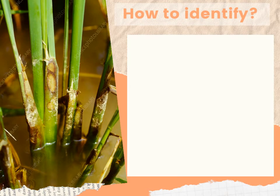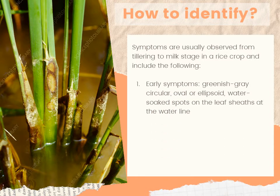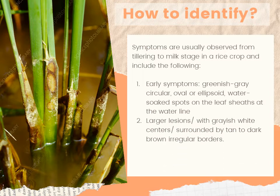Moving on to the symptoms of rice sheath blight: early symptoms usually develop on the leaf sheaths as water-soaked, secular, oval, or ellipsoid water-soft spots which are greenish-gray in color. As the disease progresses, they enlarge and tend to connect, forming larger lesions with grayish-white centers surrounded by tan to dark brown irregular borders.